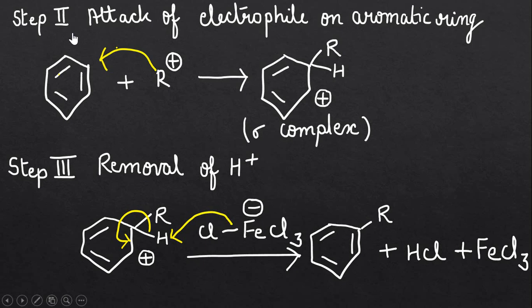Now move to the second step: the attack of electrophile on the aromatic ring. This carbocation, which is the electrophile, attacks the benzene ring. Actually, this benzene ring has three pi bonds which are loosely held, so these pi bonds can be easily broken and these pi electrons can be donated to the electrophile.